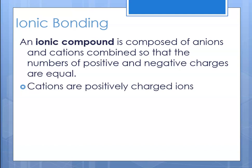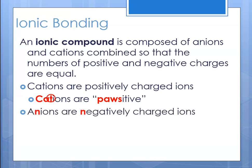It's important to understand that cations are positively charged ions. You can say that cations are positive because cats have paws, or you can notice that there is a plus sign in the middle of the word cation. So cations are the positive charged ions. Anions are negatively charged, and it's important to keep that straight.